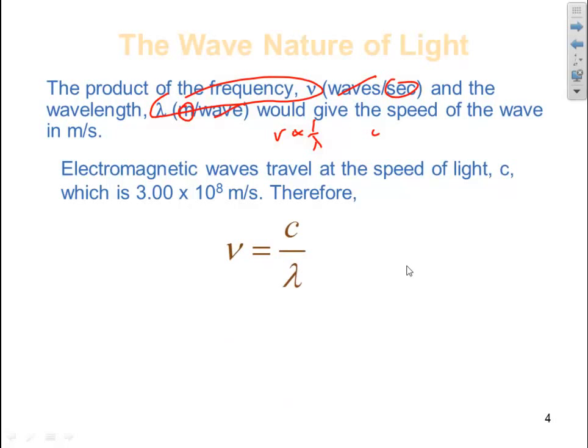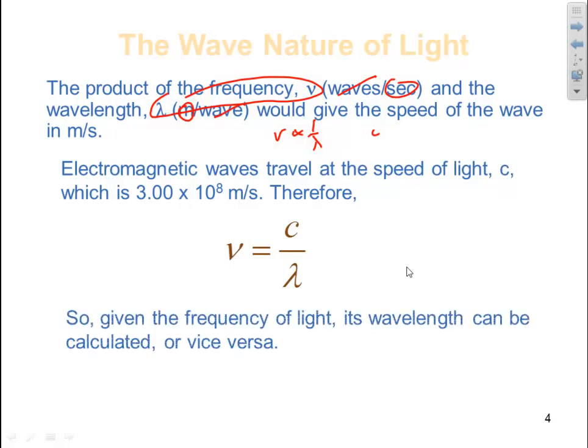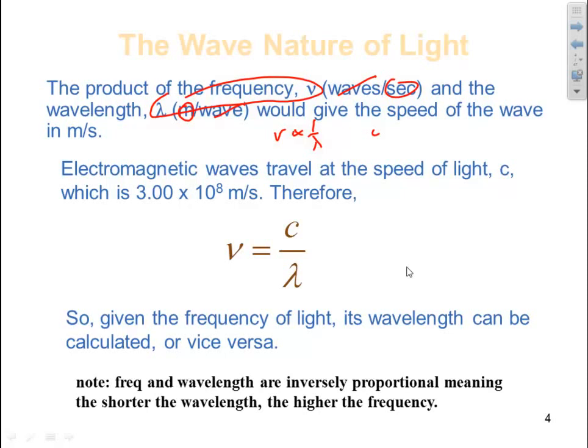Frequency is equal to the speed of light divided by the wavelength. So given the frequency of light, its wavelength can be calculated, or vice versa. Note, frequency and wavelength are inversely proportional, meaning the shorter the wavelength, the smaller that gets, the more frequent, the higher the frequency.